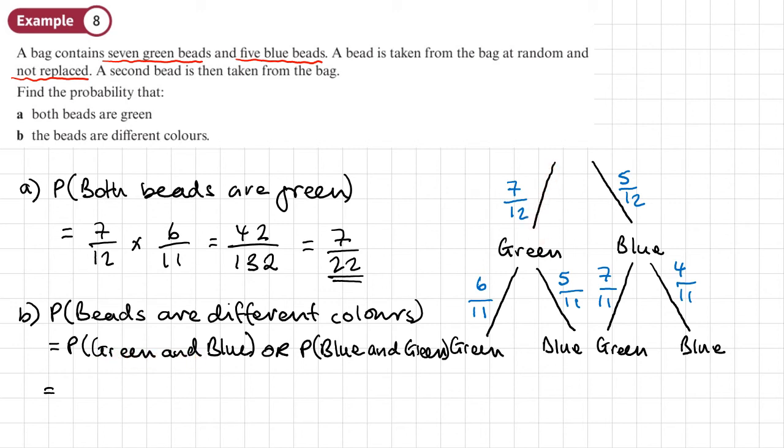So the probability of green and blue. So green and blue is seven over 12 for the first green. And the second one is blue times five over 11. Plus, because we now have to go into it down a different route, blue and green. So five over 12 times seven over 11.